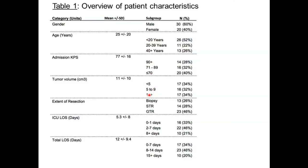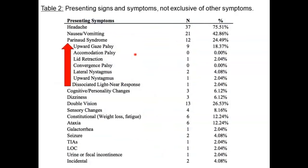These tumors, like ventricular tumors, grow really large before they're diagnosed. They come in very large with obstructive hydrocephalus, and patients come in sick and stay in the ICU for a long time. When Josh looked at all the patients, only 75% had headaches — I would have thought 100%. 42% had nausea and vomiting. Parinaud's syndrome — I would have thought 100% — but only 25% had it. Parinaud's syndrome includes upward gaze palsy, accommodation palsy, lid retraction, convergence palsy, lateral nystagmus, upward nystagmus, and light-near dissociation. That was extremely rare in this series.